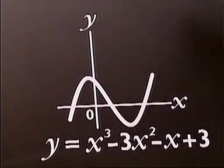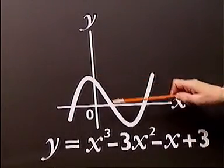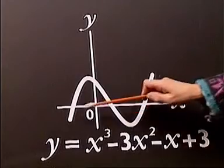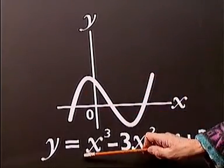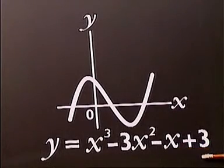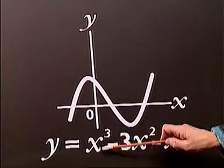In our third graph, we have both a maximum value and a minimum value, and this is an example of a cubic graph. We can easily recognise a cubic from its equation as it will have a term which is cubed.